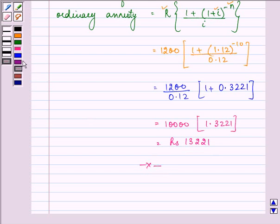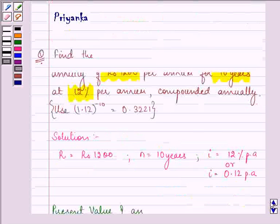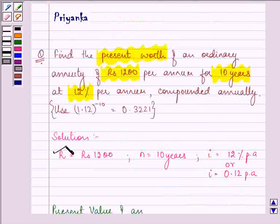So this completes the session. Hope you understood how to find out the present value of an ordinary annuity when we are given R, that is the periodic payment towards this annuity, the time period and the rate of interest.